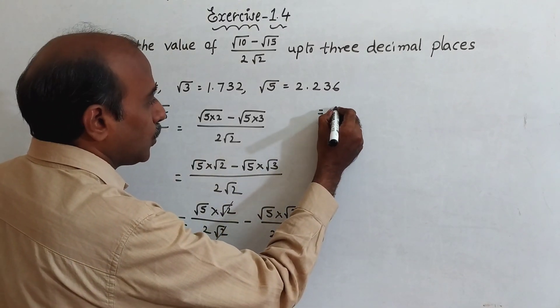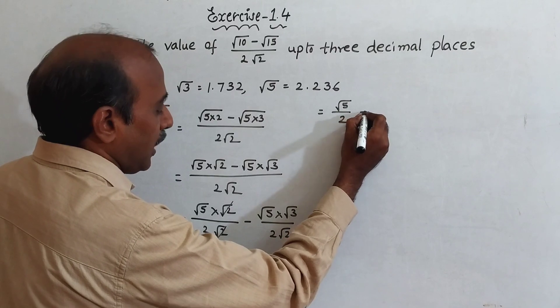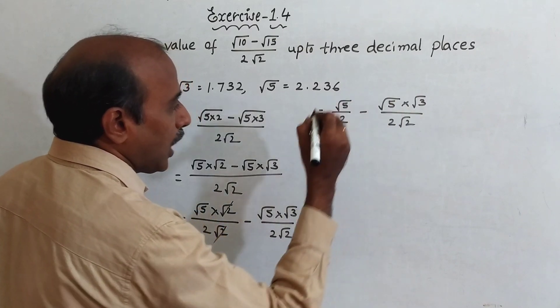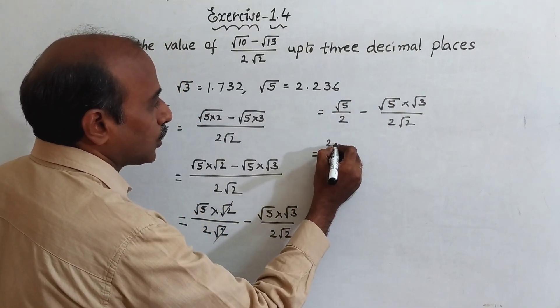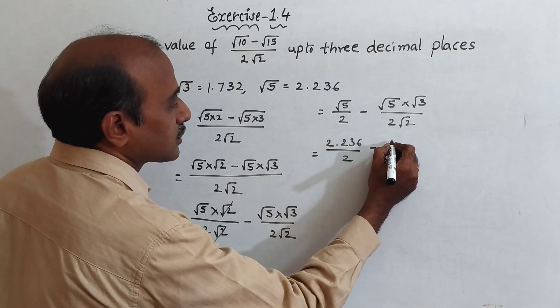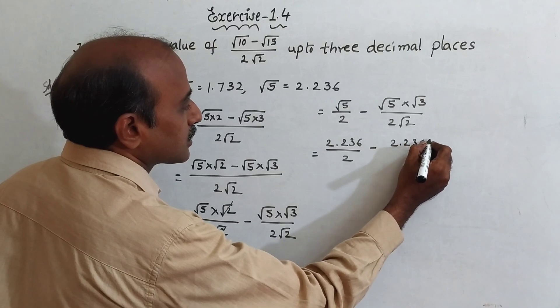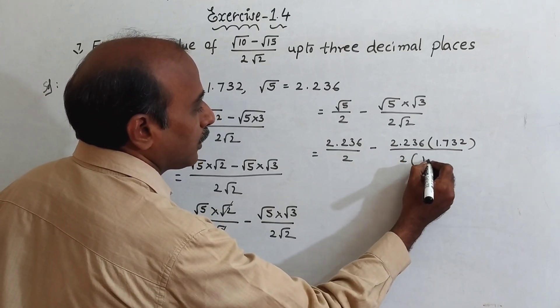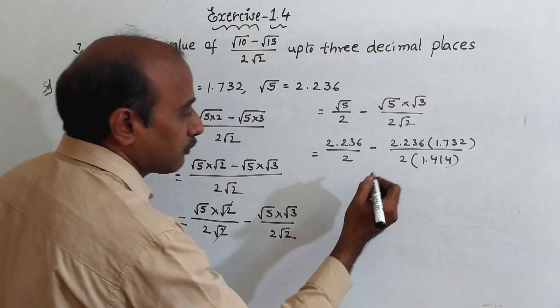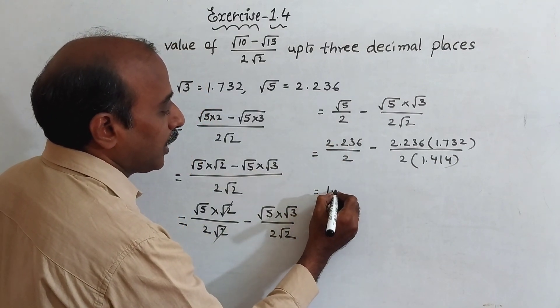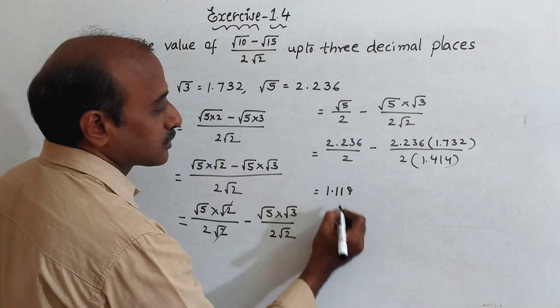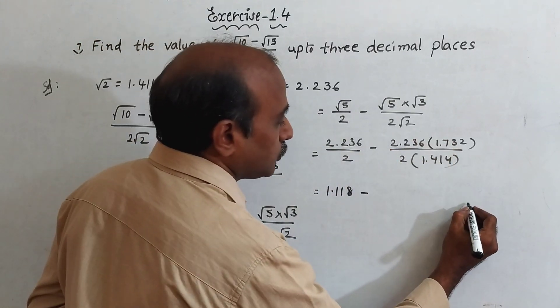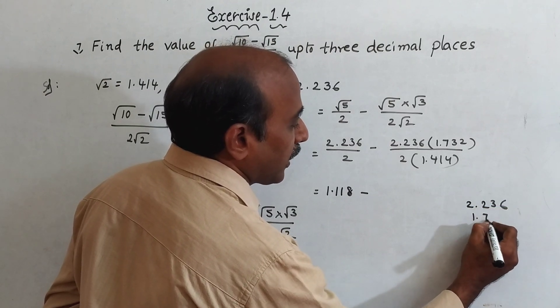Now you can get here root 5 by 2 minus root 5 into root 3 by 2 root 2. Now you have to substitute the values. Root 5 is 2.236 by 2 minus 2.236 times root 3, 1.732, by 2 times 1.414. Root 2 value is 1.414. Now this you have to divide: 1.118 minus 2.236 into 1.732.